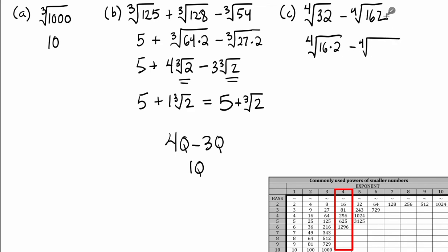Same procedure. Follow that for 162. You don't find it in the list. So you look for numbers in this list smaller than 162. In this case, 81 times 2 is equal to 162.